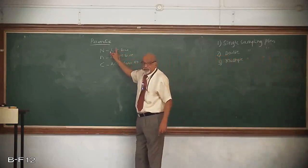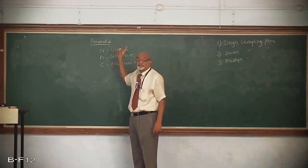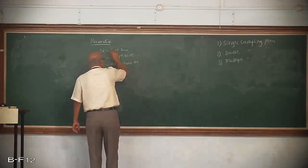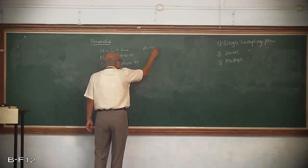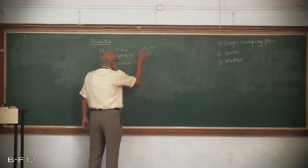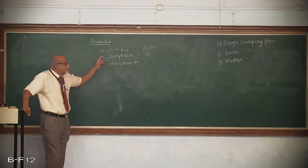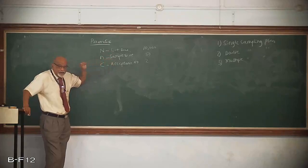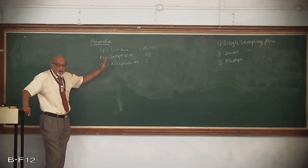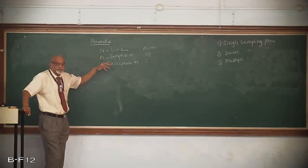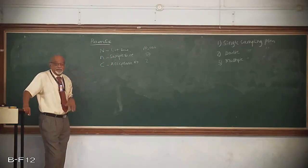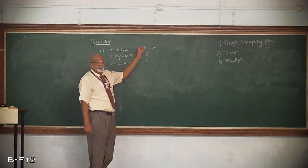For example, let us say that lot size N is equal to 10,000, sample size n is equal to 50, and acceptance number C is equal to 2. In single sampling plan, from a lot of 10,000 items, you take a sample of 50. If it consists of 2 or less than 2 defectives, accept the lot; otherwise, reject the lot. If the lot is rejected, 100% inspection will be done. If it were 100% inspection, all 10,000 items would have been inspected.